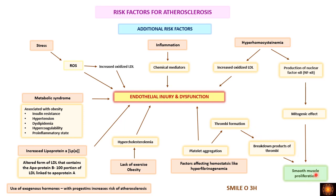In hyperhomocystinemia, there are increased reactive oxygen species, leading to increased oxidized LDL, which causes endothelial injury. Additionally, this condition causes increased production of nuclear factor kappa-beta, which has a mitogenic effect and causes smooth muscle cell proliferation. That is why patients with hyperhomocystinemia have increased risk of atherosclerosis. In inflammation, increased chemical mediators directly damage the endothelium.